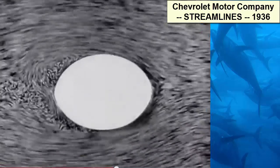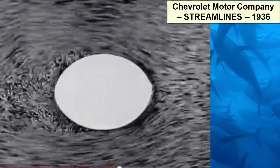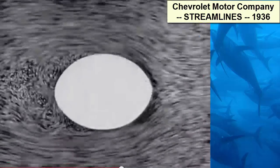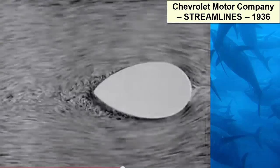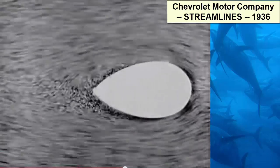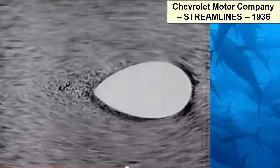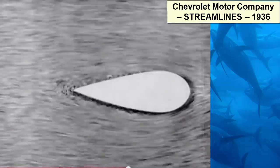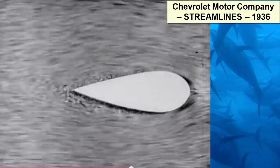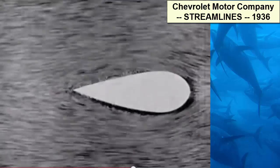Making a shape longer and thinner tends to cut down resistance — this decreases the violence of the eddies and reduces the suction at the rear. With an even thinner shape, the liquid flows more easily and there are fewer eddies at the rear. A streamlined shape with a blunt nose and tapering rear eases through with the least resistance and brings the liquid together at the rear with minimal disturbance.